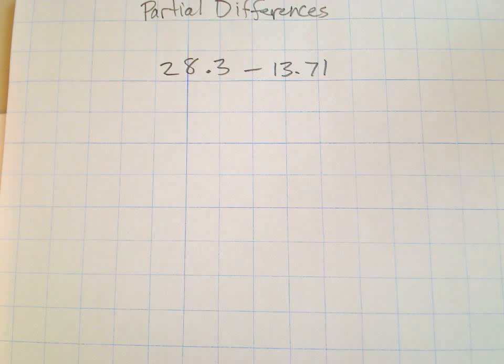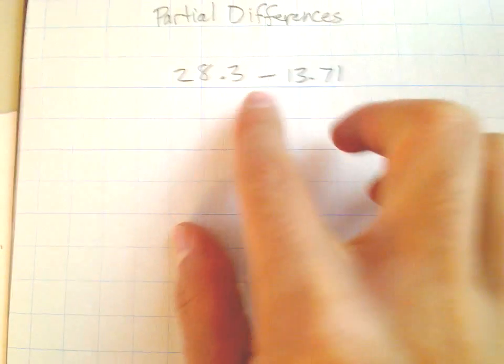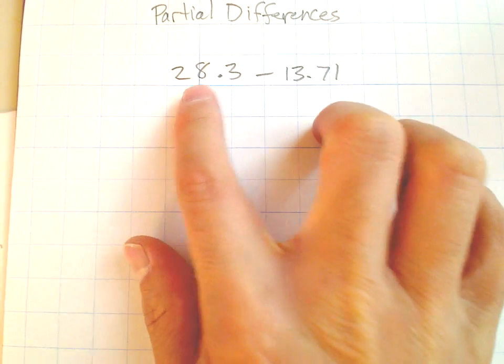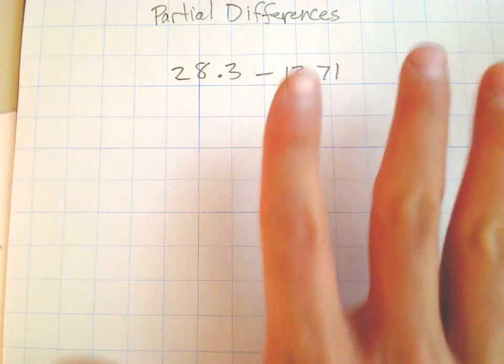Alright ladies and gentlemen, we're going to review the partial differences algorithm for subtraction. We're going to start with a really easy one, but we're using decimals. We're going to look at 28.3 minus 13.71.